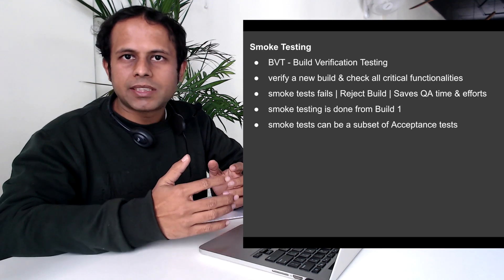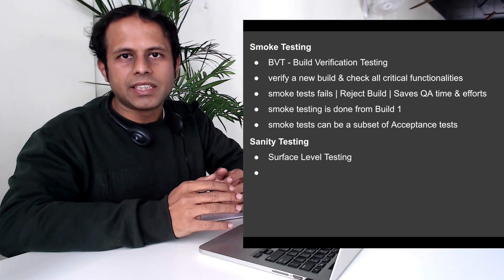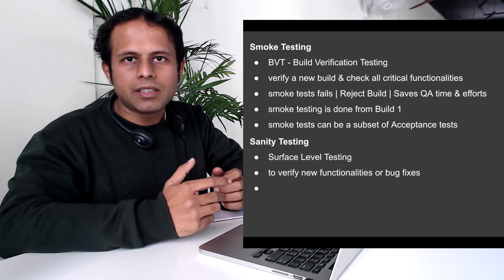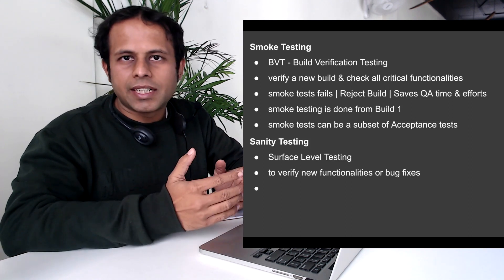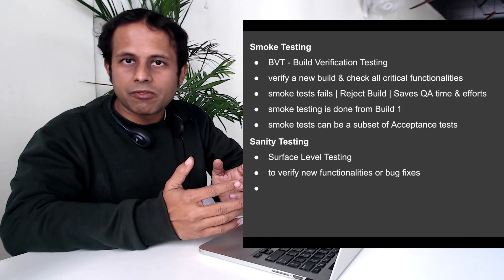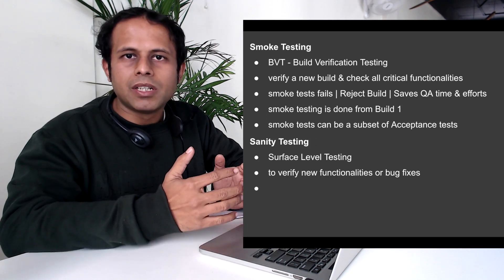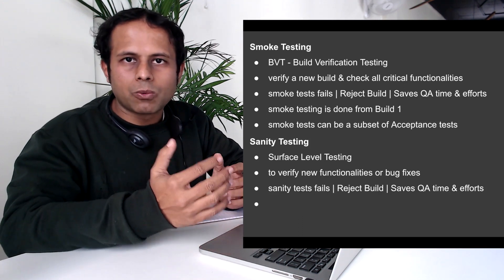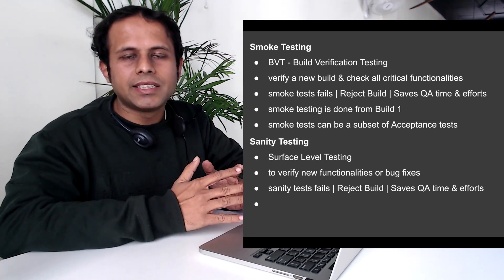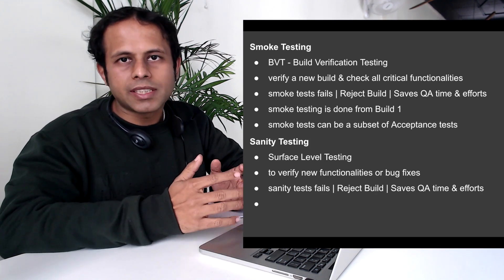Sanity testing is also called surface level testing. It is done to verify a new functionality or a bug fix in a build, and it checks that the build is stable for further testing. If anything is wrong with the new functionality or with the bug fix, it can be rejected right there. The main goal of sanity testing is to check that the proposed modifications, changes, or bug fix works as intended.